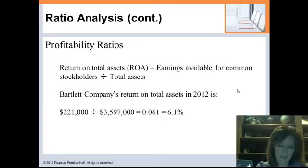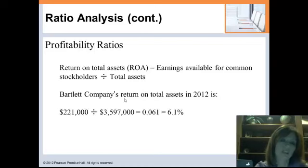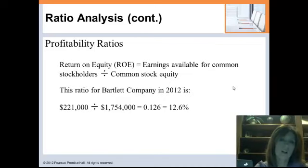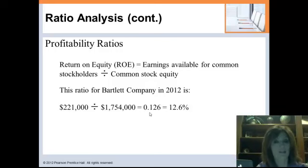Return on assets measures how much our assets are generating for us — earnings available for common divided by total assets. We would like our assets to generate as much as possible, and for Bartlett it's a 6.1% return on assets. If we can make more money off of fewer assets, we have a competitive advantage in our industry. Return on equity looks at what the common stockholders' investment is generating — earnings available for common divided by common stockholders' equity. For Bartlett, equity holders are making 12.6%, which they can compare to other potential investments.